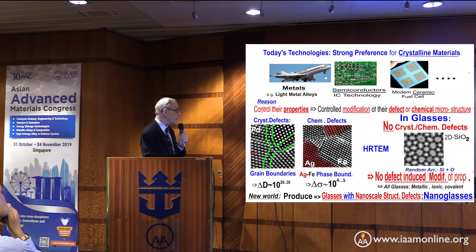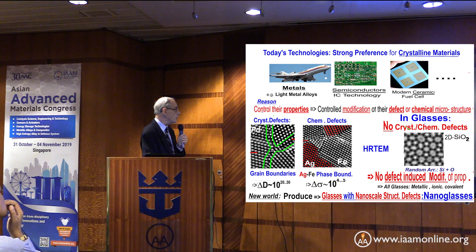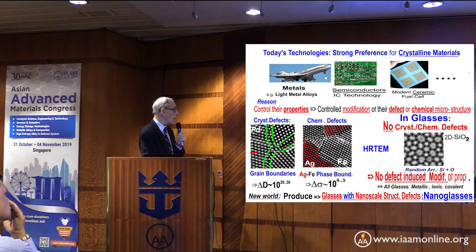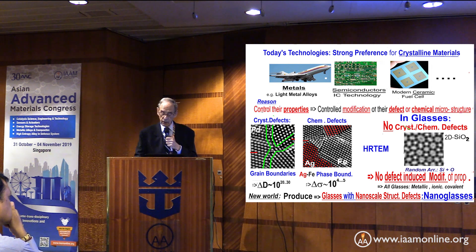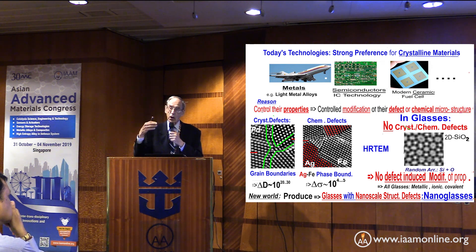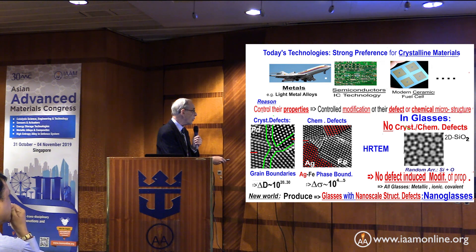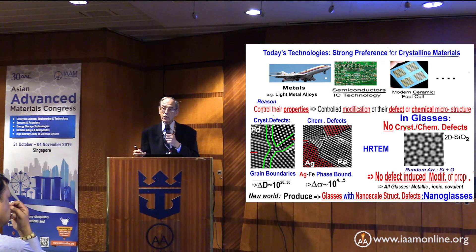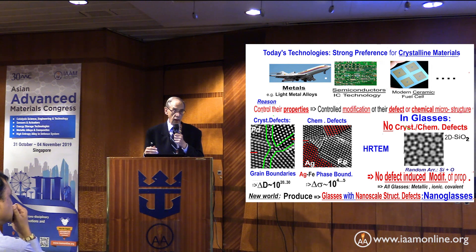In glass, the situation is very different. Here I show a two-dimensional silicon dioxide glass in a high-resolution micrograph. You have a random arrangement of silicon and oxygen atoms, but we cannot introduce defects similar to those in crystalline materials. And this is the reason why we cannot manipulate glasses today in a similar way as we can for crystalline materials.